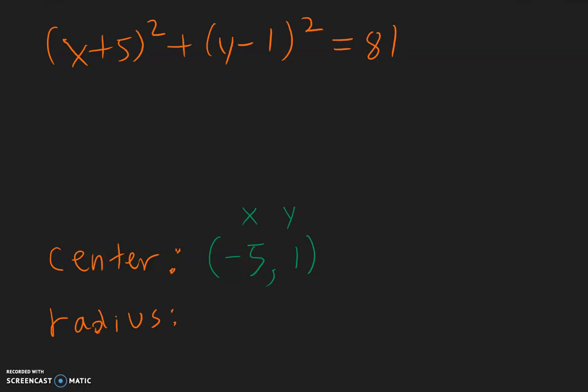Finally, the radius is very straightforward as well. See this 81? This 81 is equal to r squared, so that means the radius is the square root of that number. The square root of 81 is equal to 9.